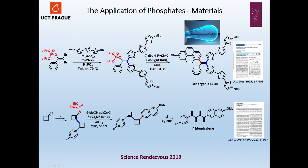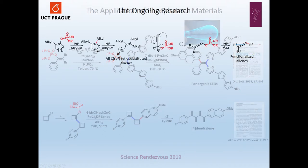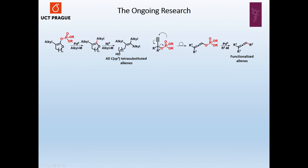And last but not least, we have developed a protocol for the preparation of disubstituted cyclobutanes, which serve as precursors for the preparation of molecules with cross-conjugated double bonds called dendralenes. As you can see, the applications of phosphates are numerous. We are currently working on many different projects — for example, using phosphates for the preparation of all sp3-carbon tetrasubstituted alkenes, which are otherwise very difficult to prepare. Another interesting example is using simple phosphates for the preparation of functionalized alenes.